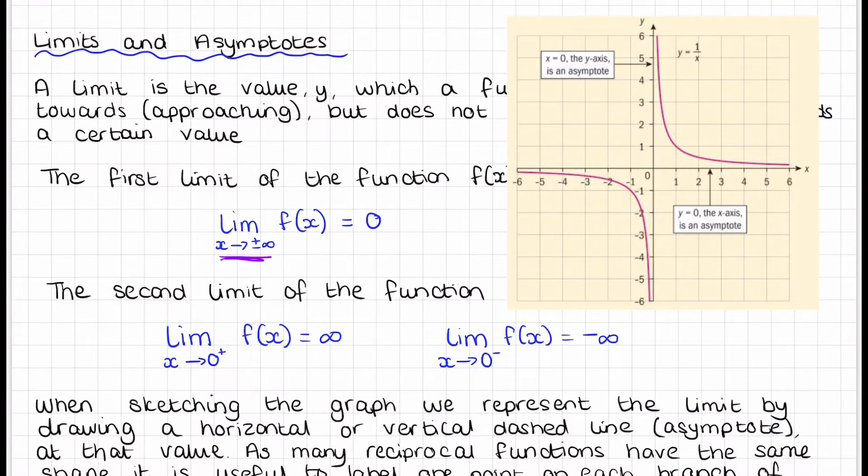As our value of x is getting closer and closer towards infinity, so the graph carries on going this way or that way to positive or negative infinity, what value is that graph getting closer and closer to on the y-axis? You would see that graph would never ever touch the x-axis. It carries on going, gets very, very close, but never touches it.